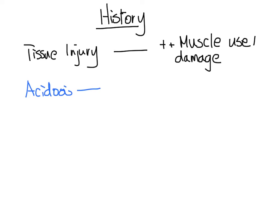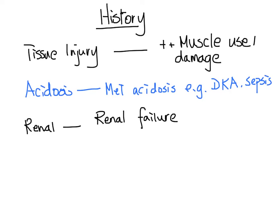For acidosis, we want to ask patients about whether they have any symptoms or causes for metabolic acidosis, for example DKA or sepsis. For renal causes, we need to know whether the patient has a history of renal failure, and for chronic renal failure patients who are on dialysis, whether they have missed any sessions.